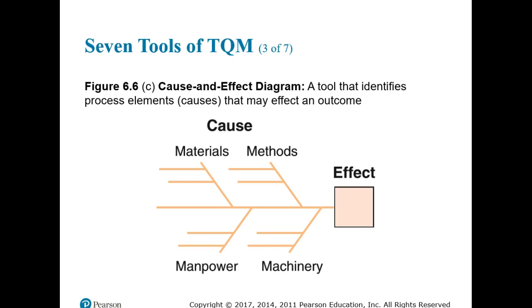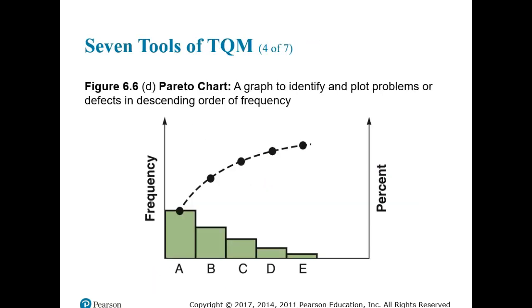Pareto charts are a method of organizing errors, problems, or defects to help focus on problem-solving efforts. Based on the work of Vilfredo Pareto, a 19th-century economist, Joseph Juran popularized the concept that 80 percent of a firm's problems result from only 20 percent of the causes — the 80/20 rule.